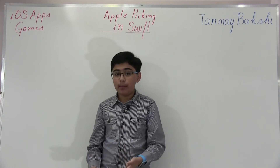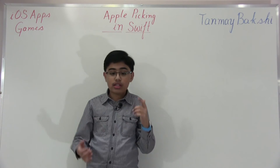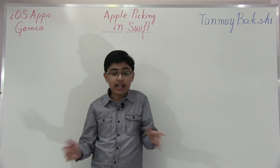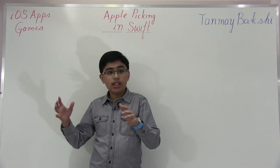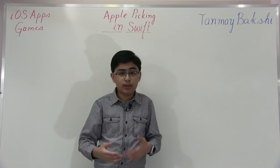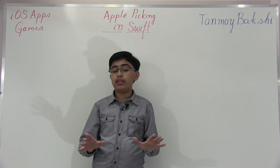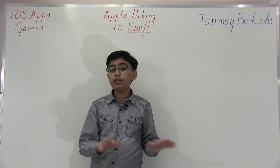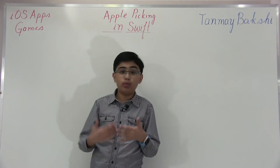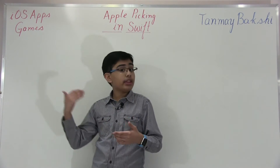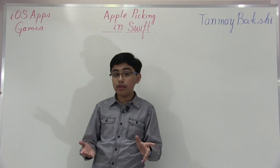The point of Apple Picking is quite self-explanatory. Lots of apples are falling from the sky and you have to move around a little player in the shape of a star to collect those apples and increase your score. There's a twist though — there are bad apples, good apples, and normal apples. Normal apples add one to your score, good apples add three, and bad apples remove three from your score.